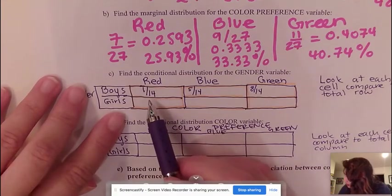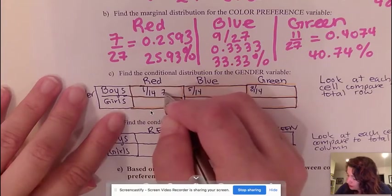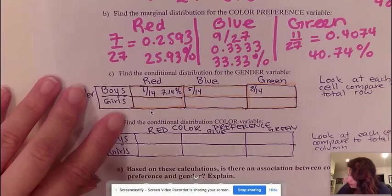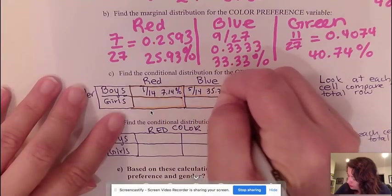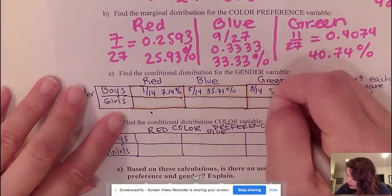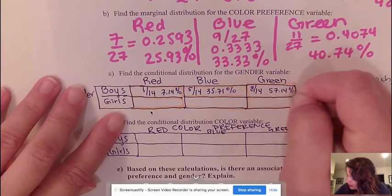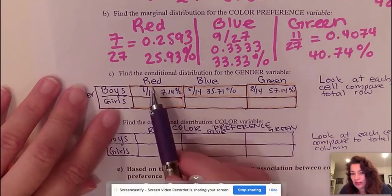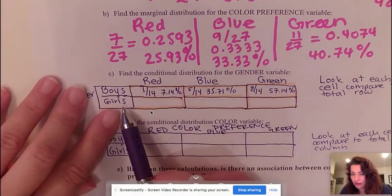So 1 out of 14 in percentage is 7.14%, 5 out of 14 in percentage is 35.71%, and 8 out of 14 in percentage is 57.14%. So these are my conditional distribution for gender, but we are not done because now we're going to do the same thing for the girls.